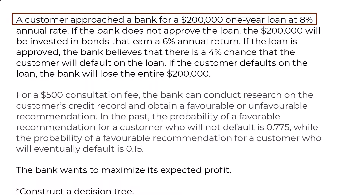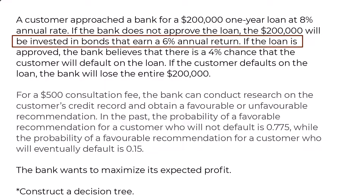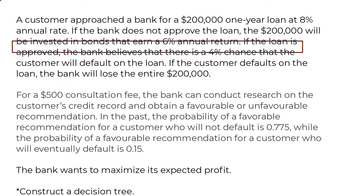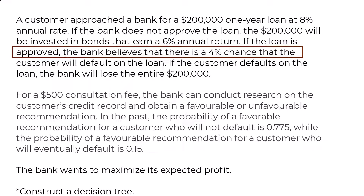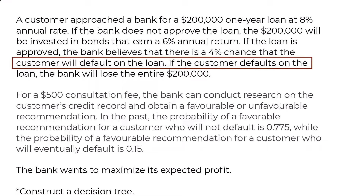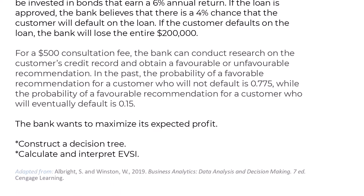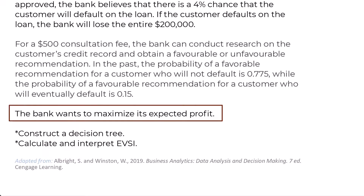A customer approached a bank for a $200,000 one-year loan at 8% annual rate. If the bank does not approve the loan, the $200,000 will be invested in bonds that earn a 6% annual return. If the loan is approved, the bank believes there is a 4% chance that the customer will default on the loan. If the customer defaults, the bank will lose the entire $200,000. The bank wants to maximize its expected profit.